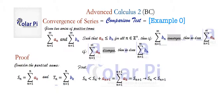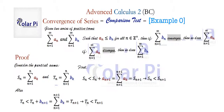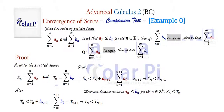Similarly for t sub n, we can write that t sub n is less than the n plus first partial sum, t sub n plus one. And because we know that a sub n is less than or equal to b sub n for all n in the positive integers, it must follow that s sub n is less than or equal to t sub n.